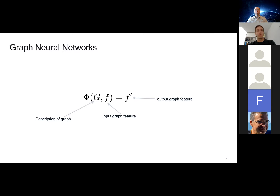At a very high level, graph neural networks look like this: we have our network phi, and as input it will take some description of a graph and also some input graph feature, and it will produce an output graph feature. In the next few slides, I'm going to talk about what exactly I mean by description of the graph and by a graph feature.